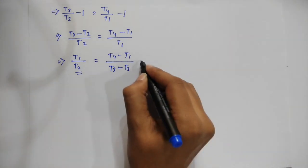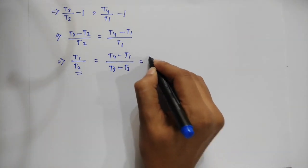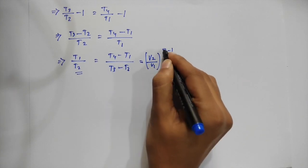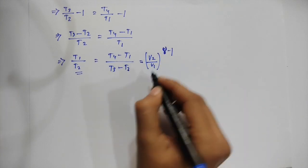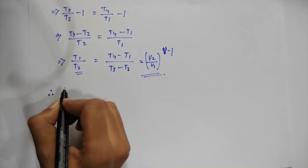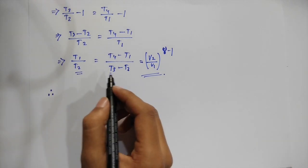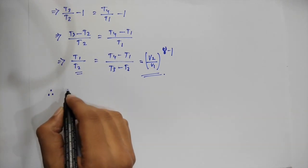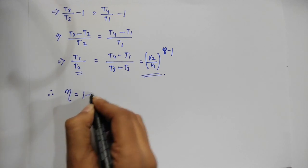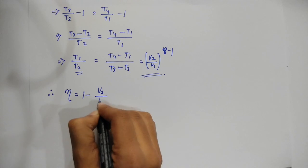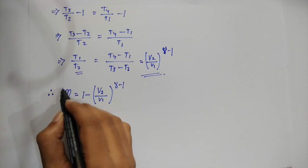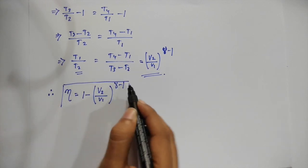We can write this as V2 by V1 whole to the power gamma minus 1, as this is an adiabatic process. Therefore, by putting these values in equation 1, we get the final value of efficiency as eta is equal to 1 minus V2 by V1 whole to the power gamma minus 1. This is the equation for efficiency.